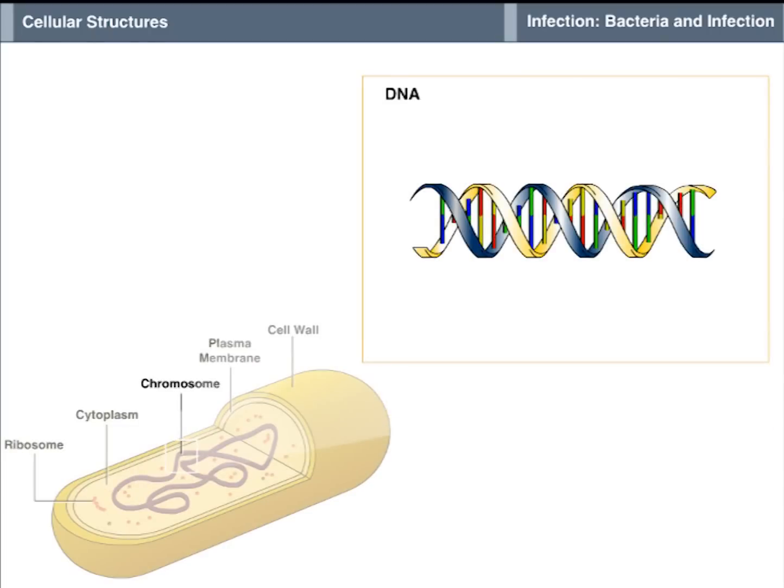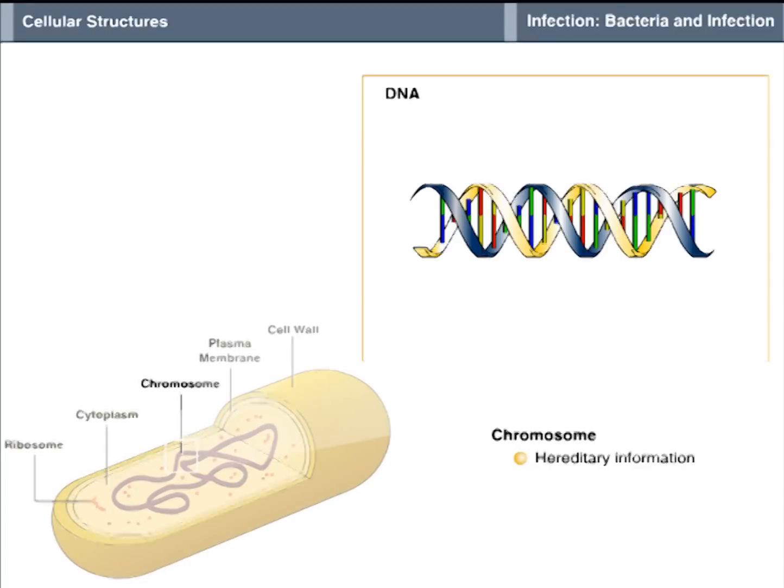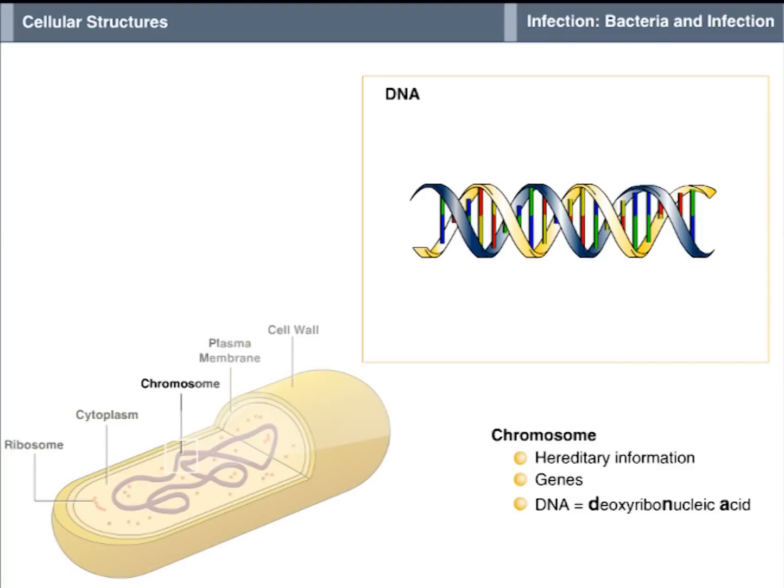In most bacteria, the genetic material is contained in one circular chromosome and contains all the hereditary information required to form a new bacterium. The chromosome consists of genes, which are made up of deoxyribonucleic acid, DNA. DNA is a material that is composed of long, thin, twisted strands of compounds called nucleotides arranged in a double helix pattern.